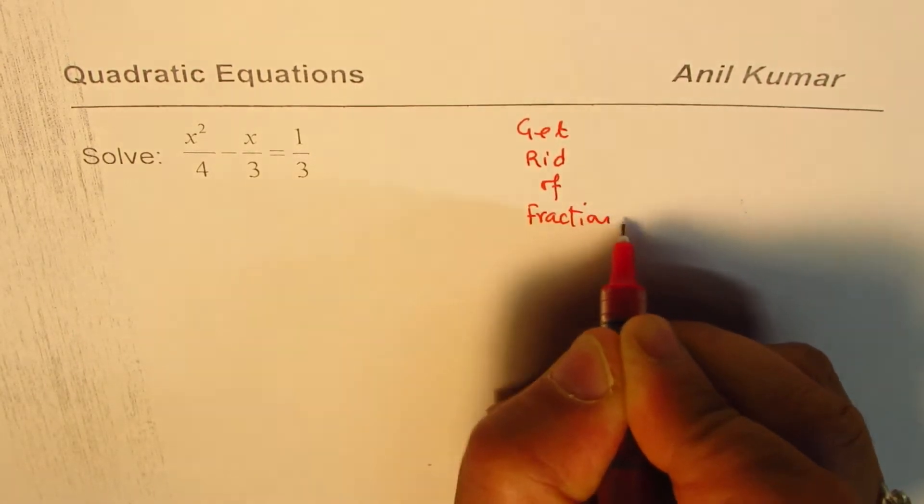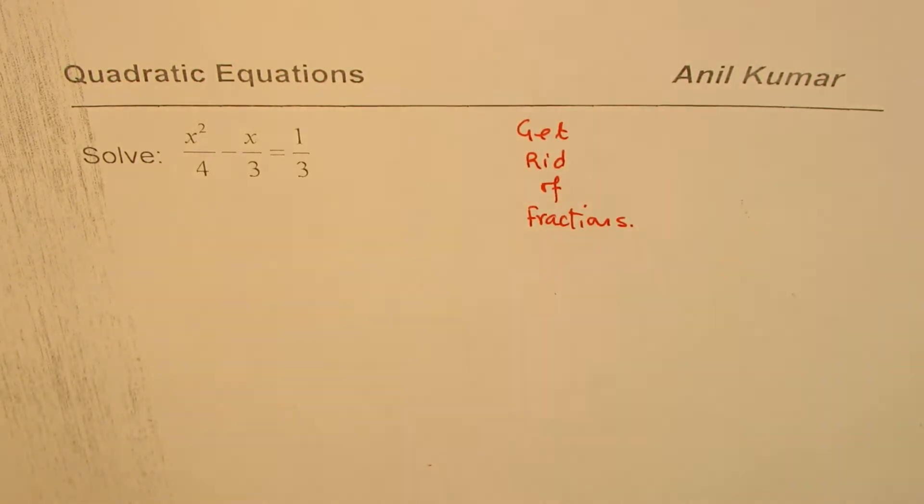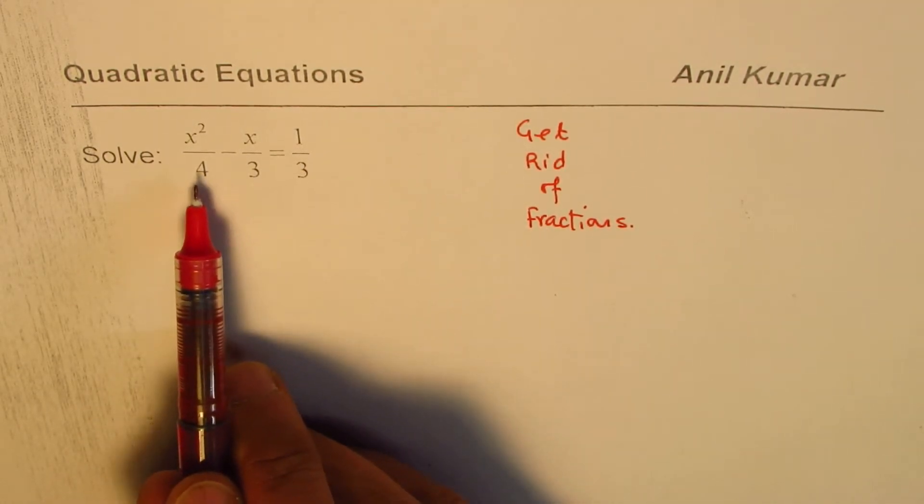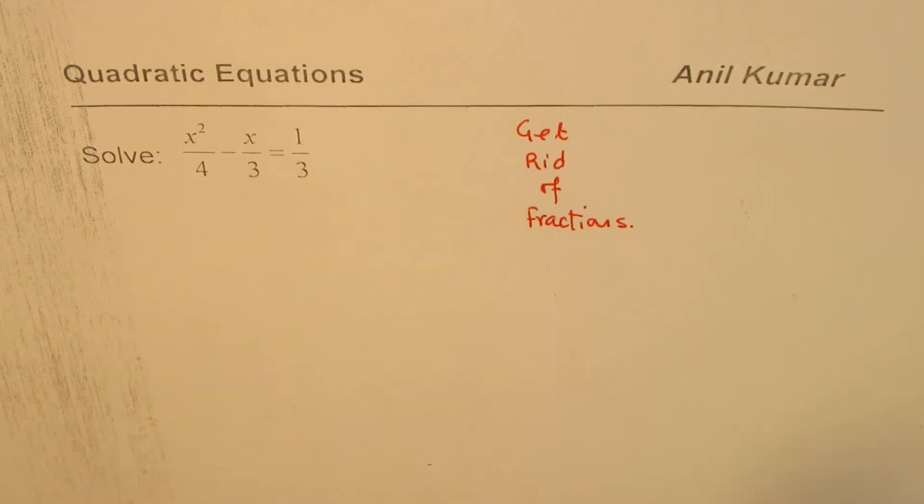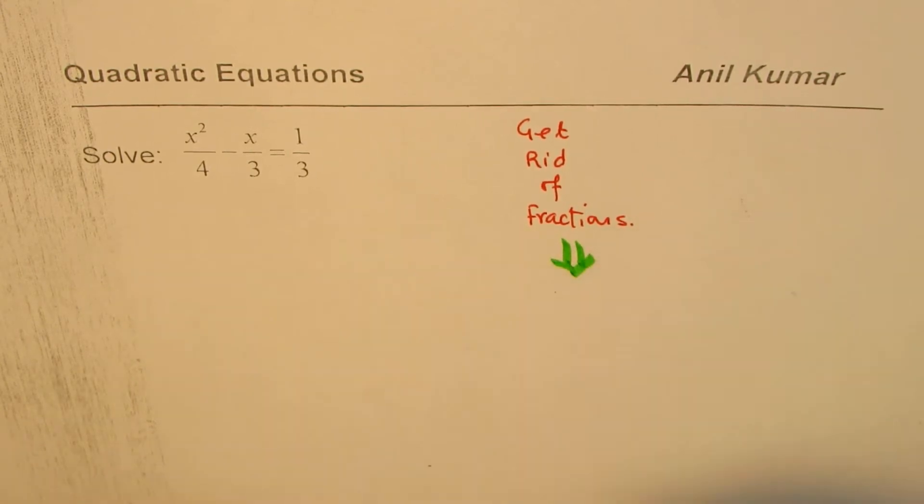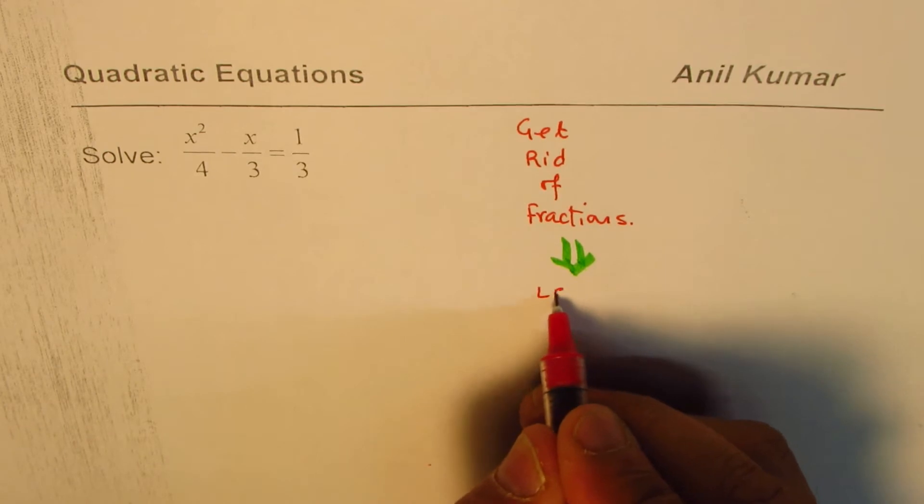Now that is the simplest strategy. Fractions make things very complicated. So even at this stage I feel uncomfortable working with fractions. So what I do here is I try to get rid of fractions. How do you do that? Well to do this we are looking for lowest common denominator.